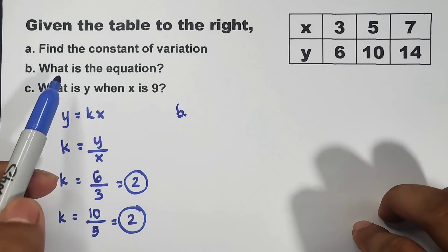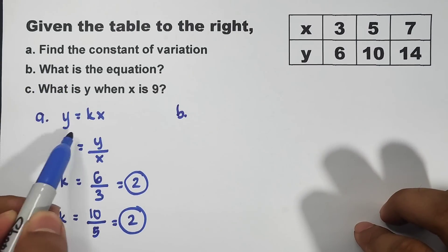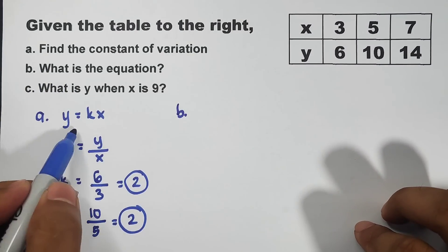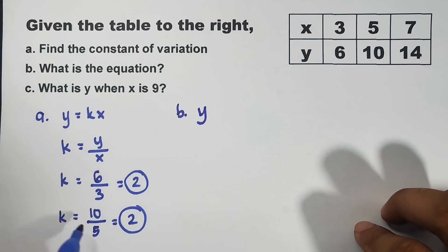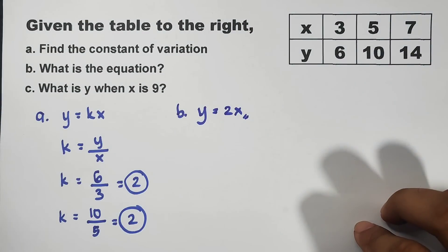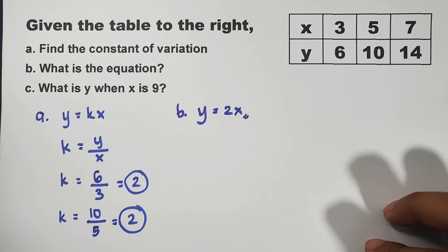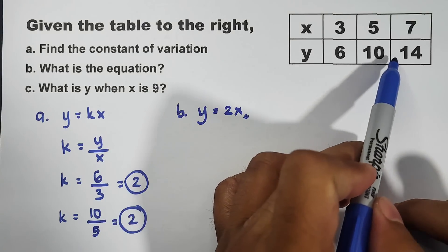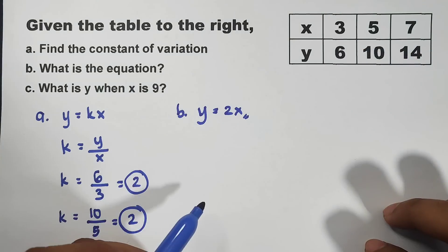For letter B, what is the equation? This is your general formula. Copy the variable y. Your constant is 2. So, y equals 2x. This is it. So, what about letter C? What is y when x equals 9? So, y is increasing, x is increasing. It should also be increasing.